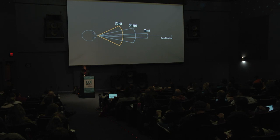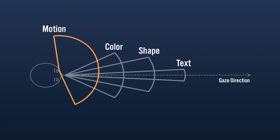Something our peripheral vision is very good at picking up is motion — we can see motion farther than 90 degrees away from our gaze direction, which makes it incredibly valuable but also sometimes distracting in interface design. Some ways to use motion effectively: to attract and guide attention, to provide feedback for actions, to help users understand the space they're navigating, and to give an application personality.